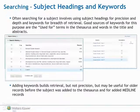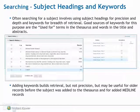Often searching for a subject involves using subject headings for precision and depth, and keywords for breadth of retrieval. Good sources of keywords for this purpose are the 'used for' terms in the thesaurus and words inside the title and the abstract.